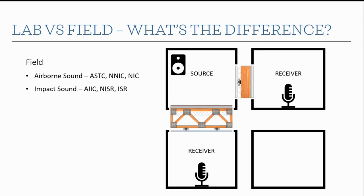In the field, different nomenclature designates it as a field test versus a lab test. For airborne sound we have three metrics: ASTC, NNIC, and NIC. For impact sound we have AIIC, NISR, and ISR. You may have also seen FSTC and FIIC — those ratings no longer exist, they're in older versions of the standard. The differences between the three metrics for each category relate to site conditions, room sizes, and amount of absorption in the spaces.